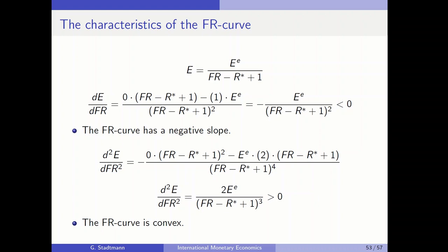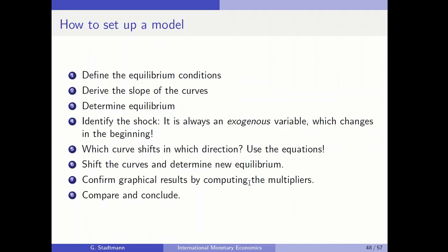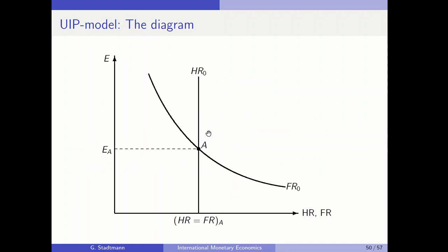We have now defined the slopes of both curves. Returning to the eight-step framework on slide 48: we have defined the equilibrium conditions, derived the slopes of the curves, and determined the equilibrium. The next step is to identify and analyze a shock. We have the equations defined and the equilibrium established from the slopes of the two curves.